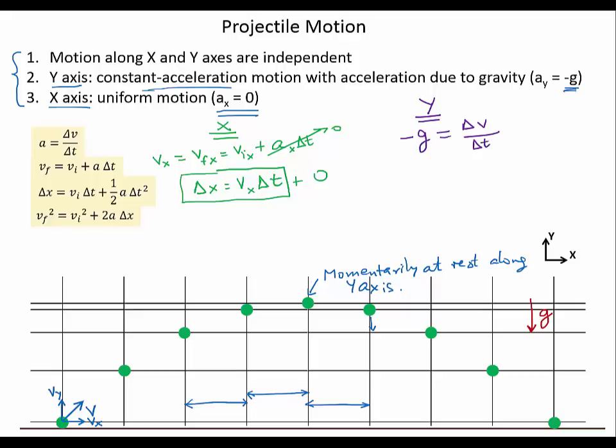The second equation is just a rearrangement of that which simply says vfy equals viy minus g times delta t. I've just simply plugged in minus g for ay. The third equation gives me delta y instead of delta x equals viy delta t minus one half g delta t squared and the last equation would give me vfy squared equals viy squared minus 2 times g times delta y. So those would be the equations along the y-axis to analyze this motion.